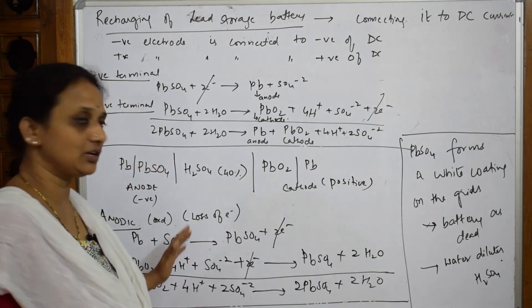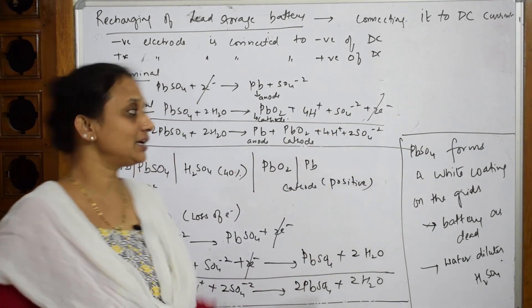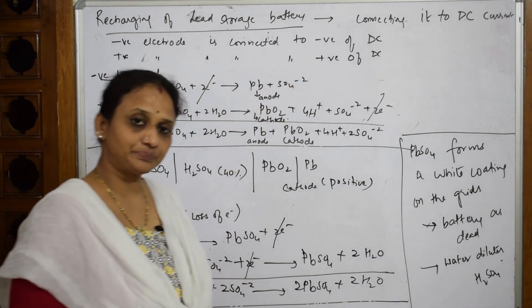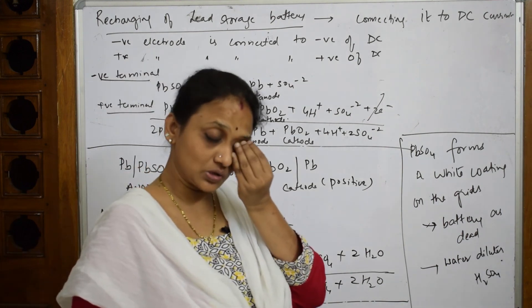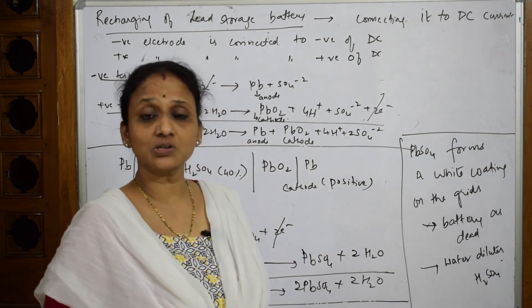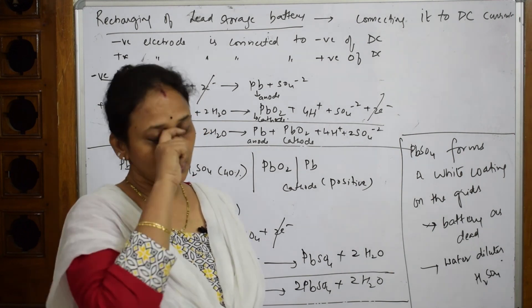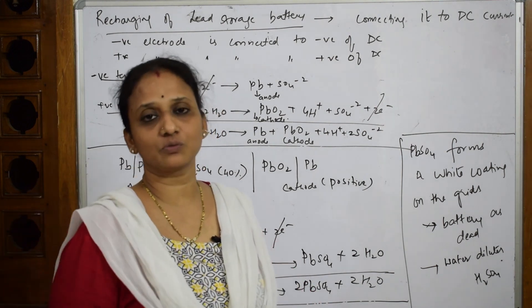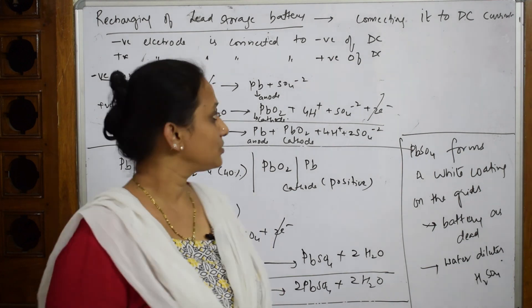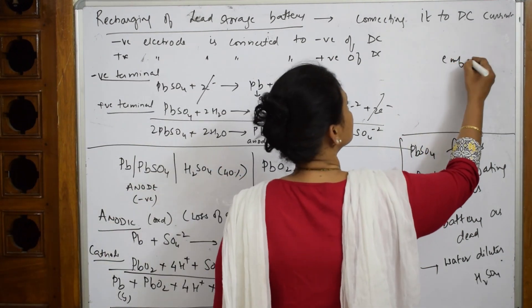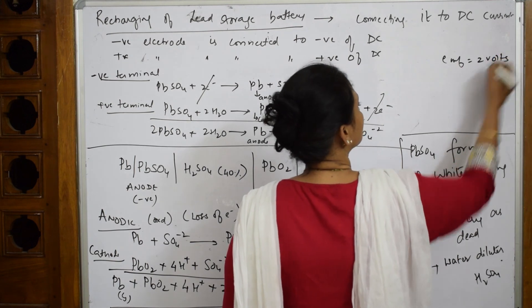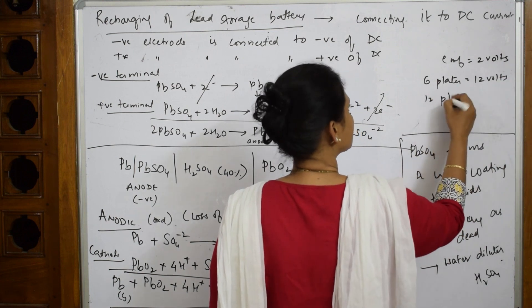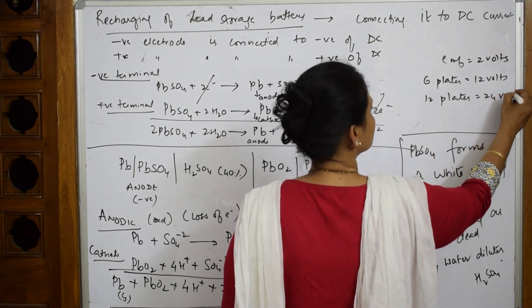The EMF of the lead storage battery is approximately 2 volts per cell. If it has 6 plates, the EMF is 12 volts; if it has 12 plates, it produces 24 volts. So the total voltage depends on the number of plate pairs in the battery.